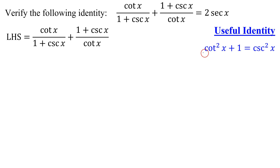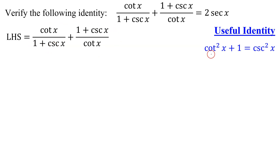And here it is: cotangent squared of x plus 1 equals cosecant squared of x. So I'm going to combine these two terms on the left-hand side over a common denominator, and hopefully this identity will help out. So I need to find my least common denominator.